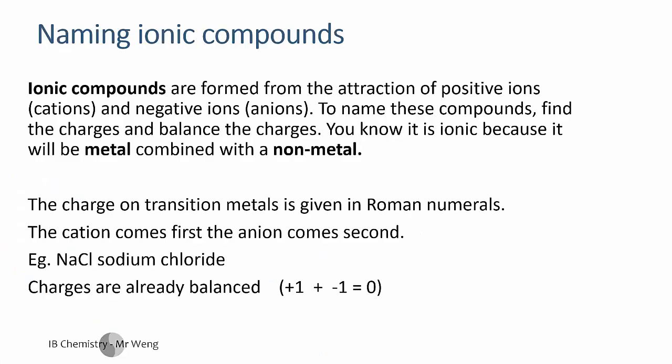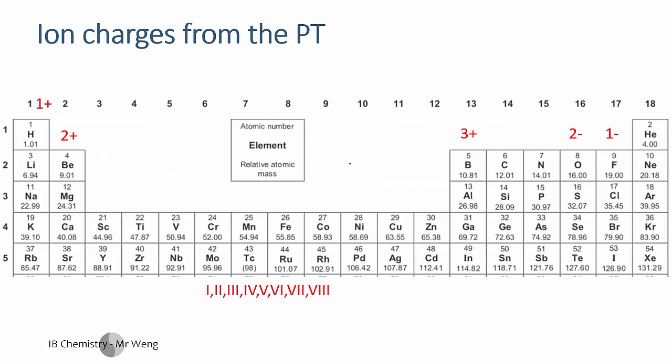Naming ionic compounds is all about getting the charges to balance, making sure the positives are equal to the negatives. It's the attraction of positive ions (cations) and negative ions (anions). The trick we use is cross multiplication, but first you have to know what the positive and negative charge is. The positive one is always the metal and the negative one is always the non-metal.